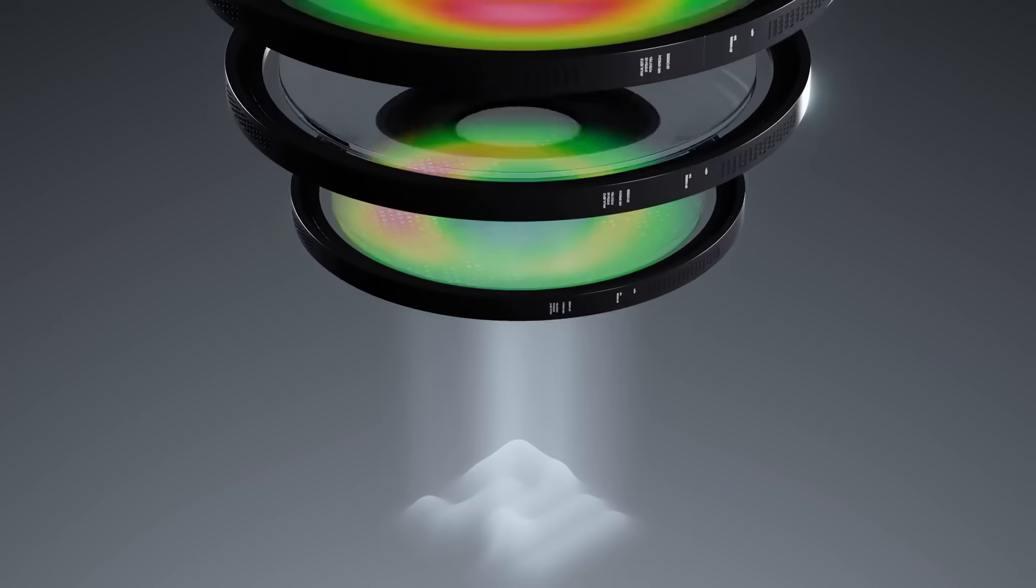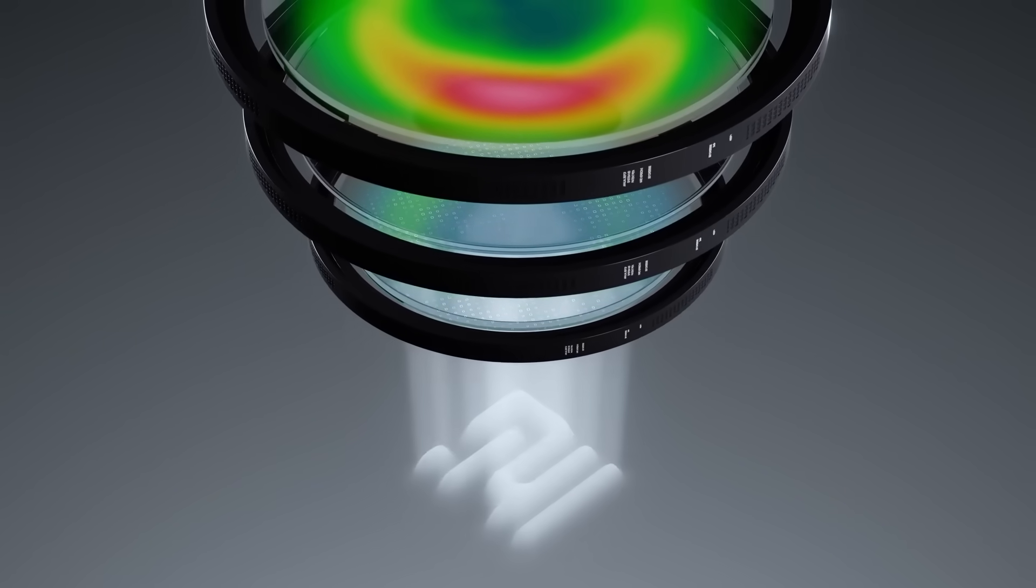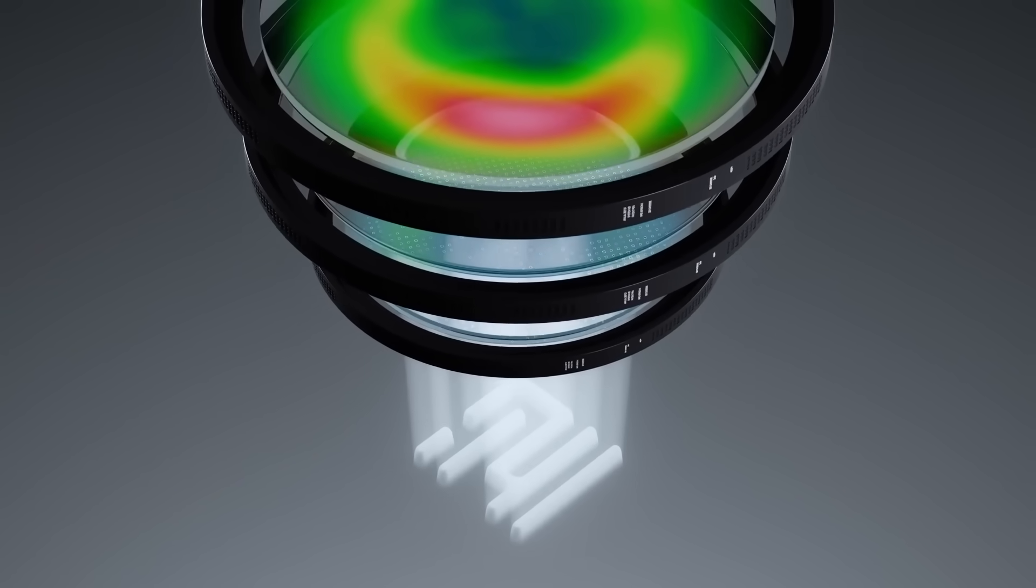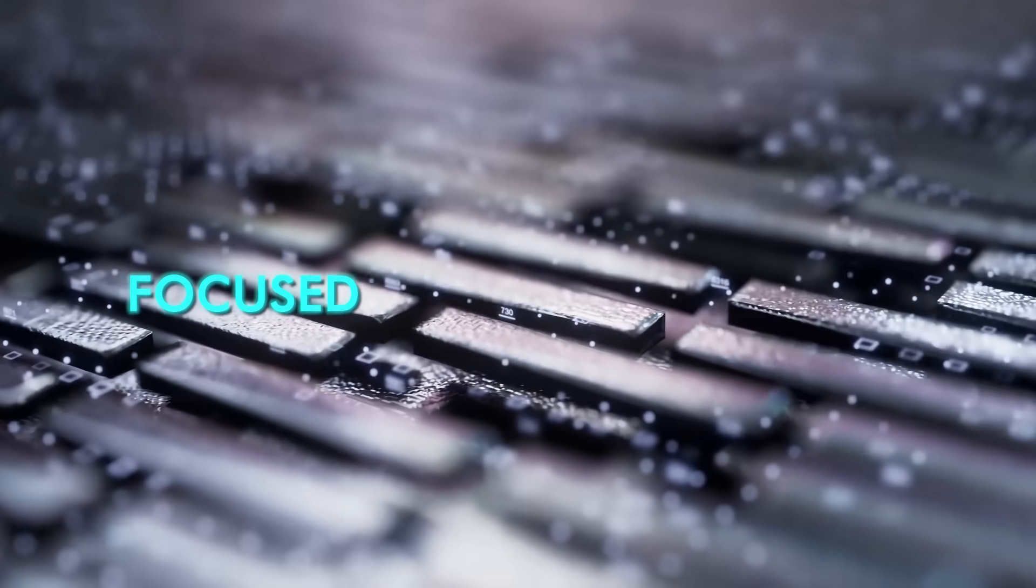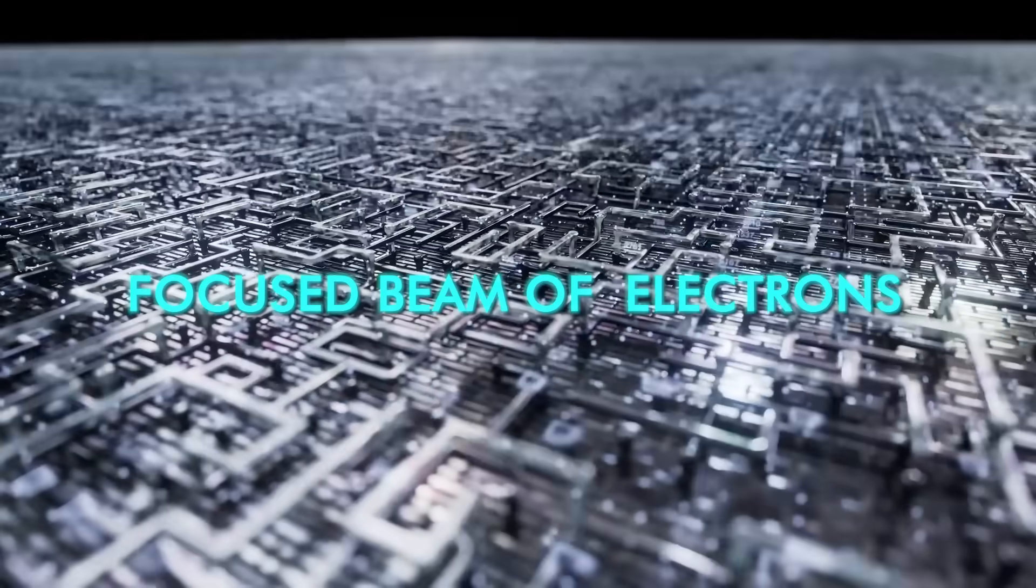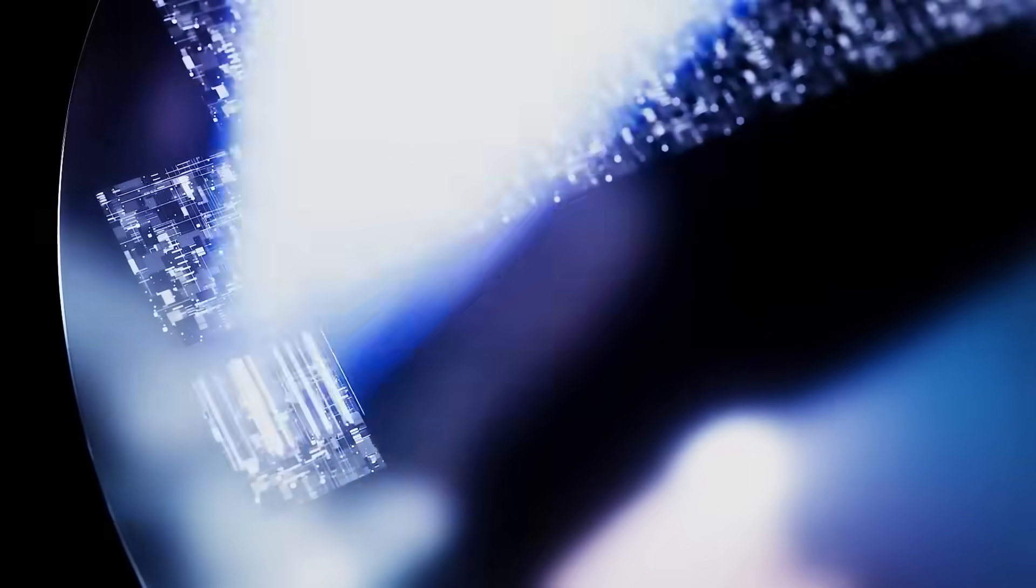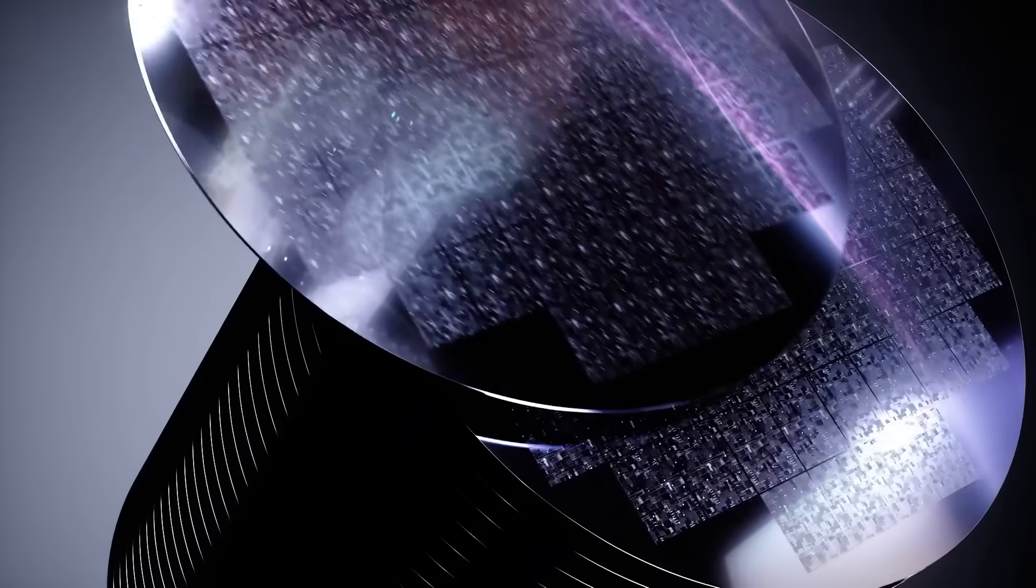This is exactly the gap DNP is pointing at. Because NIL starts with a process that's like photolithography's, it writes patterns on a mask using a focused beam of electrons. In EUV, this pattern is captured on a mirror and is then reflected onto the silicon.